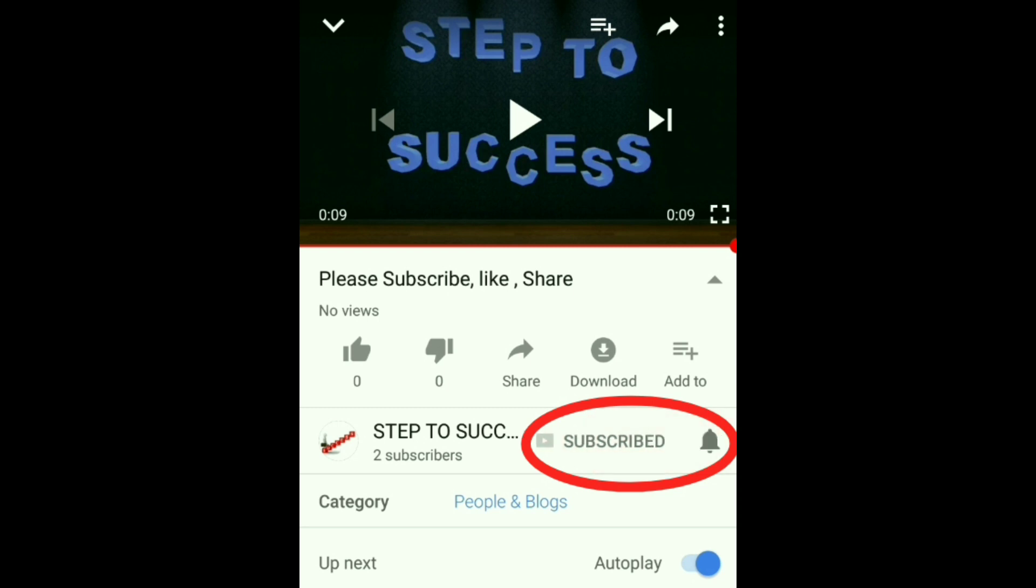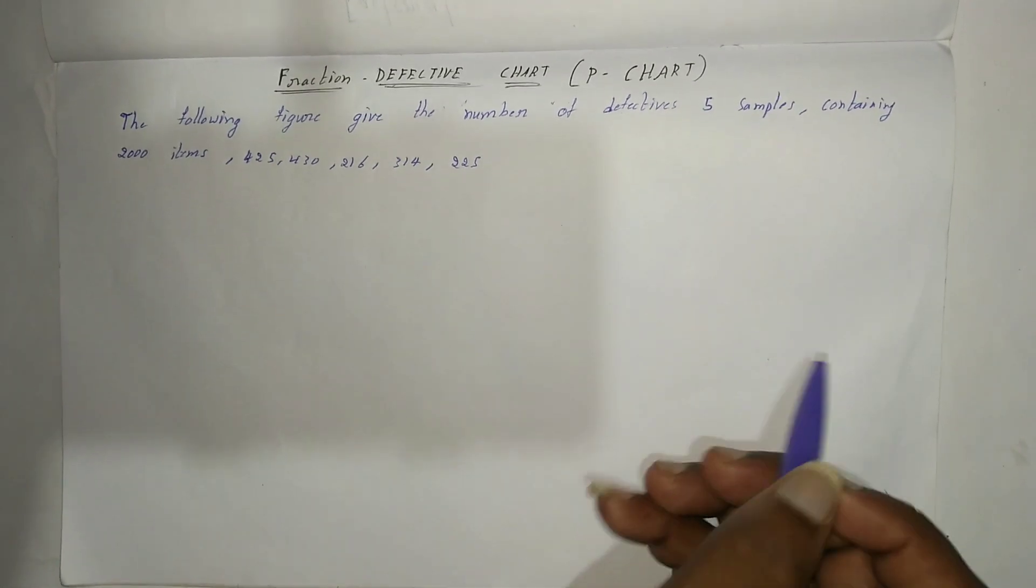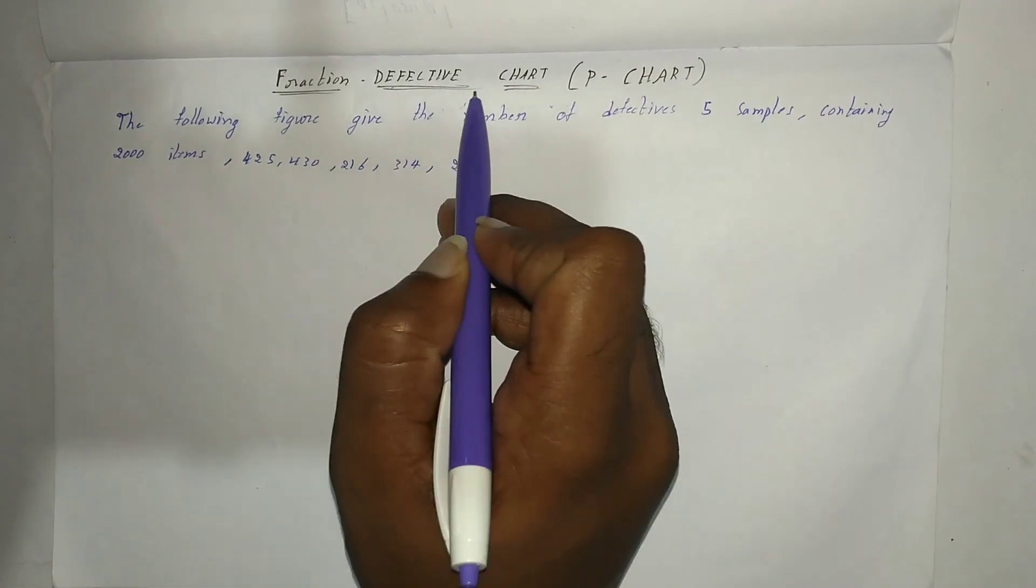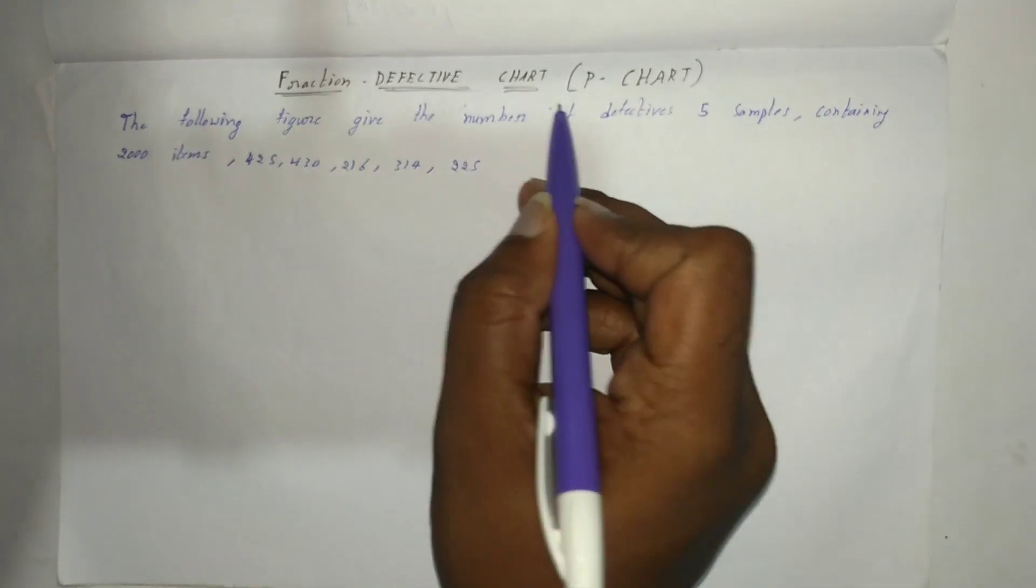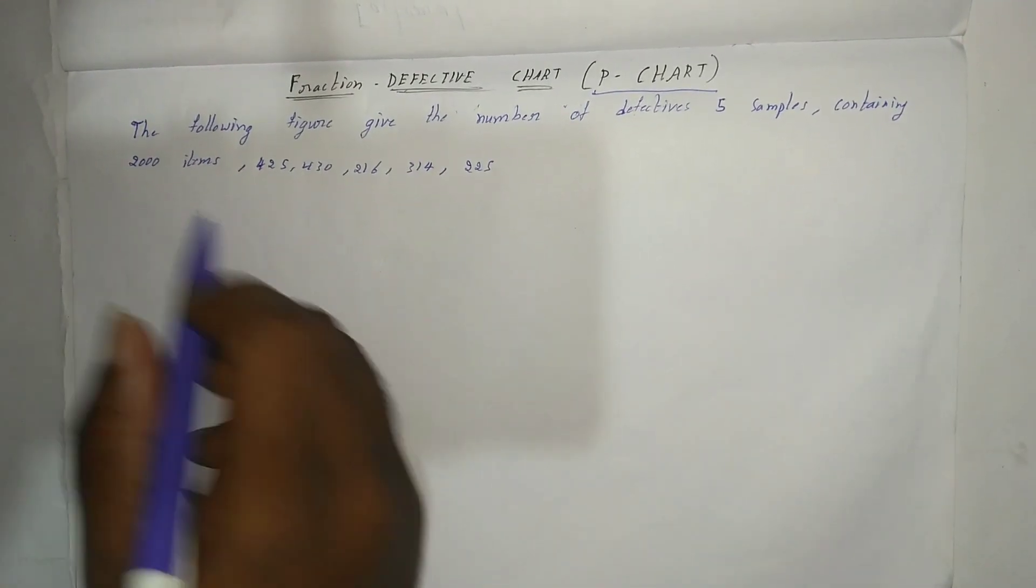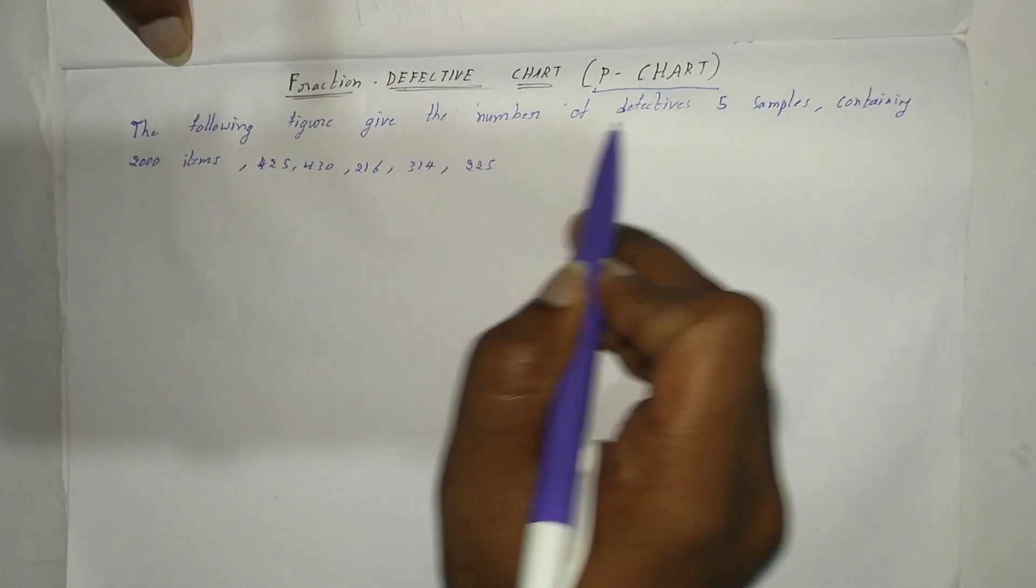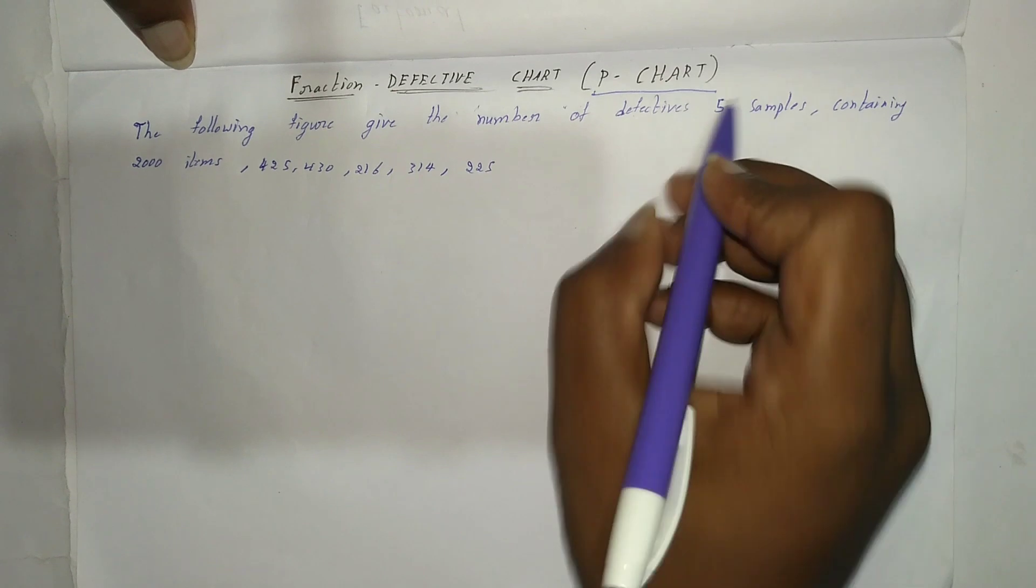Hello friends, please subscribe my channel and press the bell icon for more updates. Welcome to my channel. Today our topic is fraction defective chart, also called p-chart. The following figures give the number of defectives in five samples containing 2000 items.